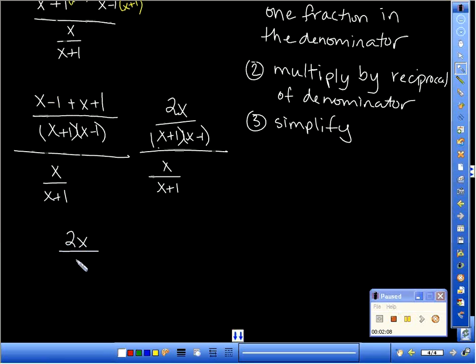Then, I'm going to multiply by the reciprocal of the denominator times X plus one over X. What is going to cancel for me? X plus one.